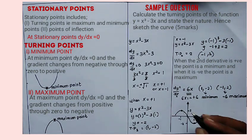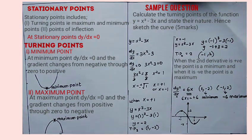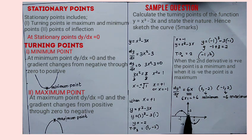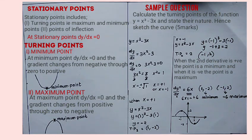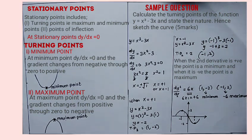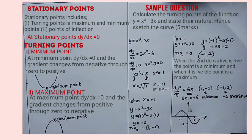As you can see, negative 1 comma 2 has become a maximum point, and (1, negative 2) is a minimum point. That will be the end of our lesson today. In our next lesson, we are going to look at the application of differentiation in velocity and acceleration.